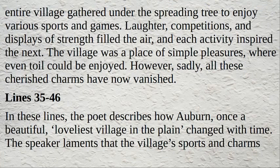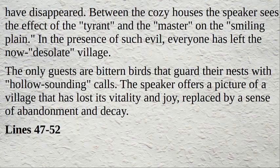Lines 35 to 46: The poet describes how Auburn, once a beautiful and loveliest village on the plain, changed with time. The speaker laments that the village's sports and charms have disappeared. Between the cosy houses, the speaker sees the effect of the tyrant and the master on the smiling plain. In the presence of such evil, everyone has left the now desolate village. The only guests are birds that guard their nests with hollow-sounding calls. The speaker offers a picture of a village that has lost its vitality and joy, replaced by a sense of abandonment and decay.